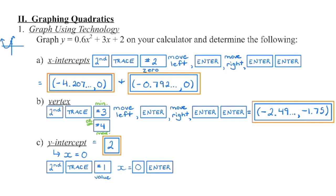I've written those two values down as ordered pairs: this is the first x-intercept and this is the second x-intercept. We know x-intercepts occur when y is equal to zero. If rounding to the nearest tenth, the first value would stay as negative 4.2. The second has a seven in the tenths position but a number higher than five following it, so that bumps to an eight — giving negative 0.8. Watch what to round to if it tells you; if it doesn't, just indicate that the number keeps going.